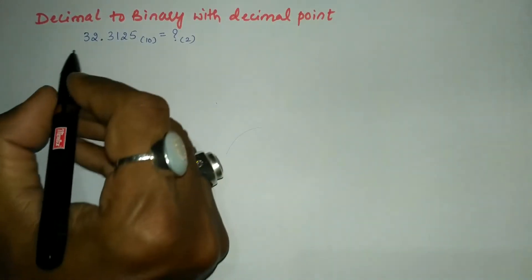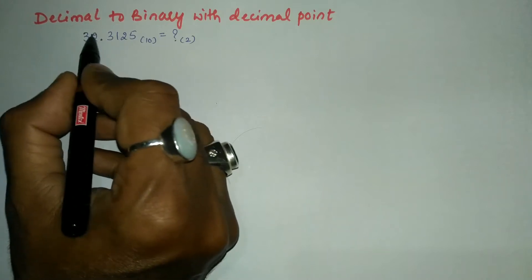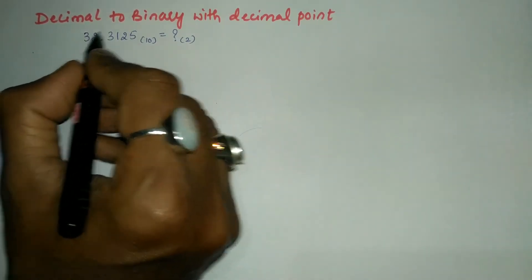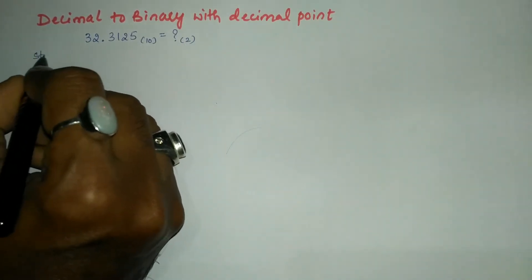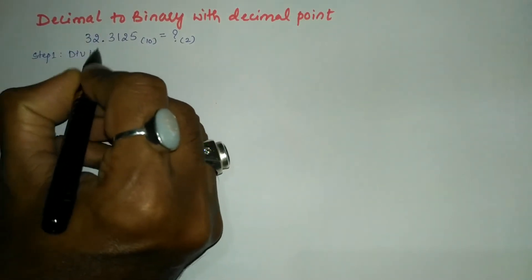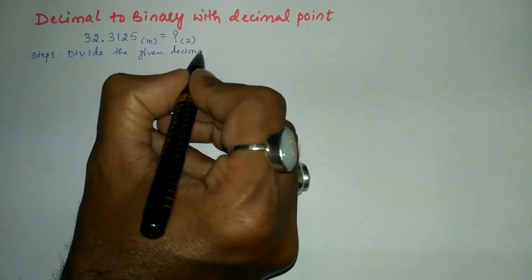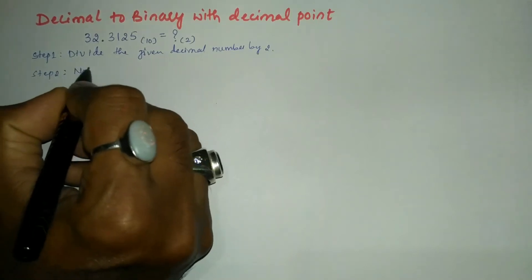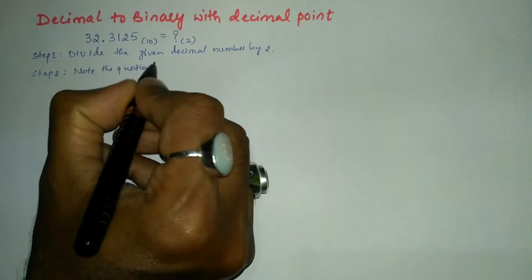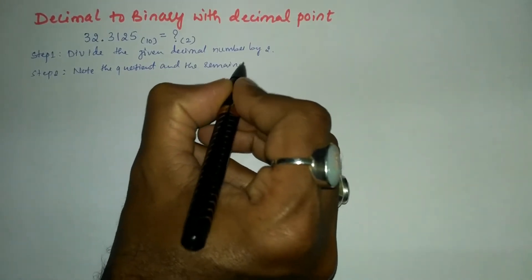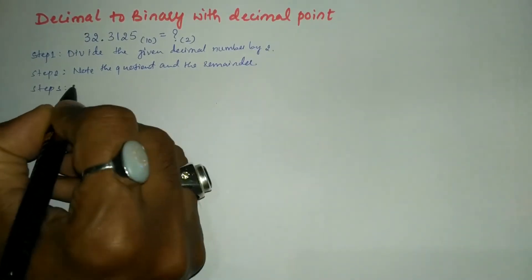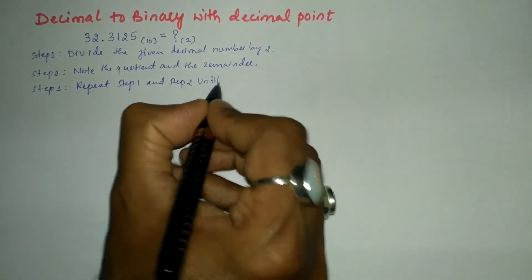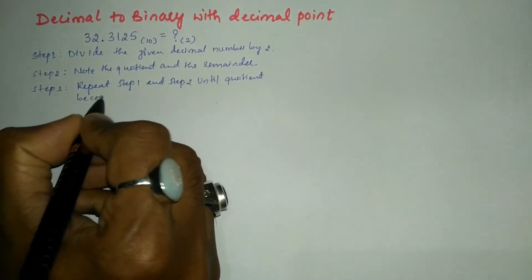First of all we have to separate the whole number 32, which has to be divided by 2. Step 1: divide the given decimal number by 2. Step 2: note the quotient and the remainder. Step 3: repeat step 1 and step 2 until the quotient becomes 0.